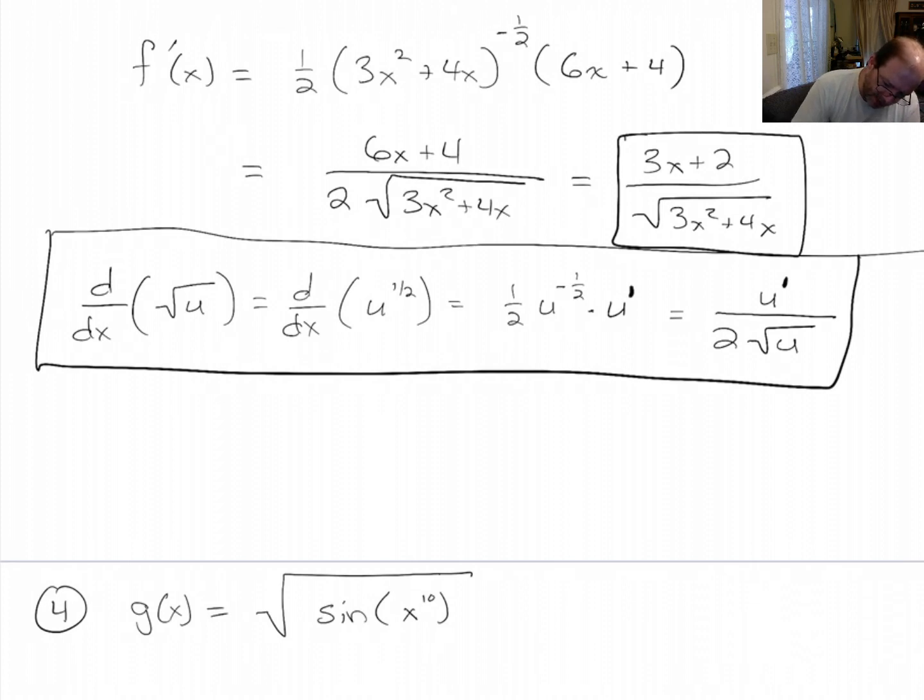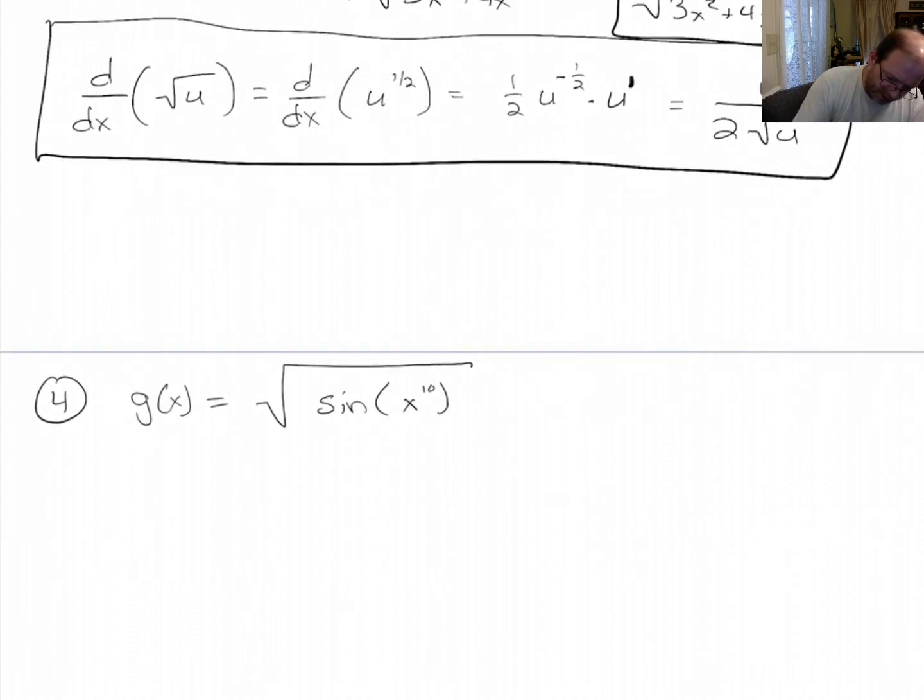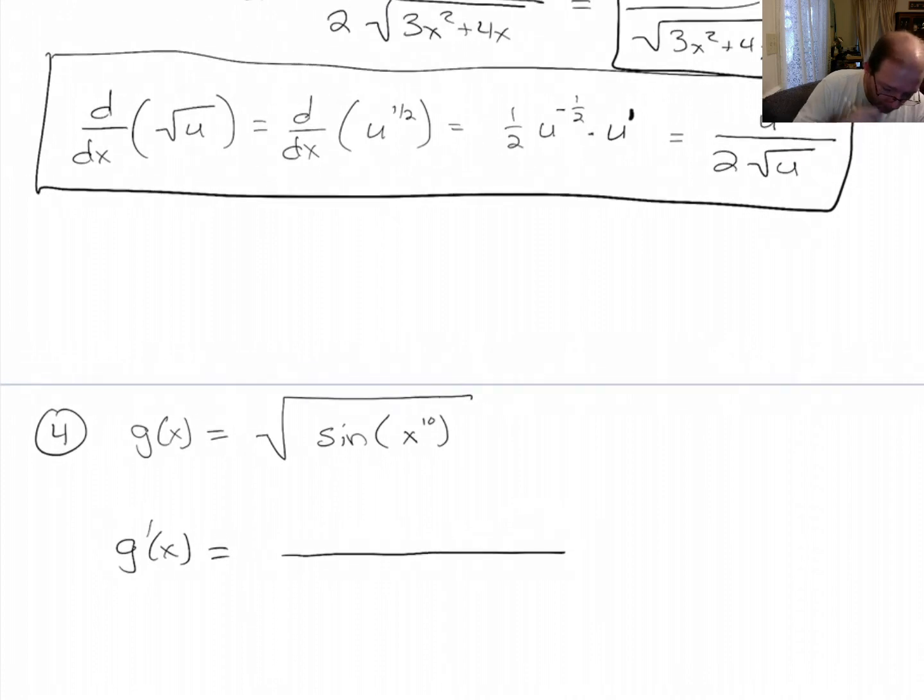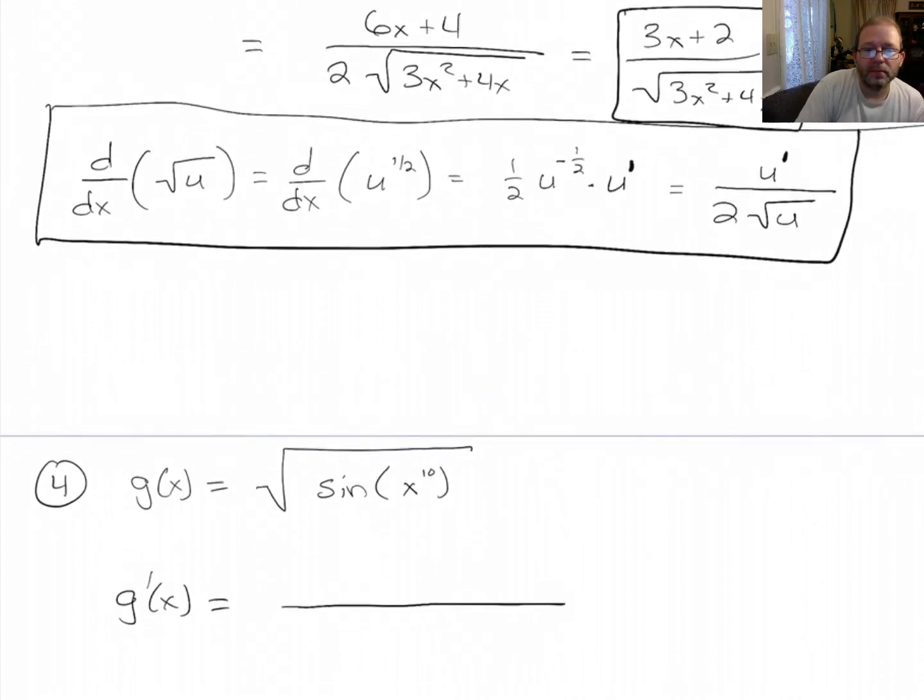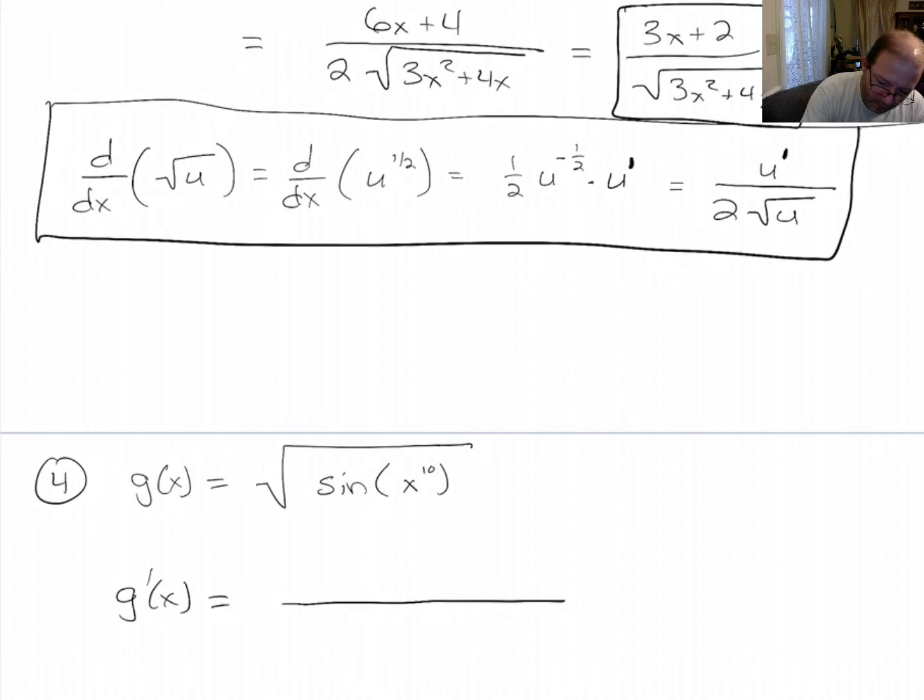Sine, square root of sine of x to the 10. What this rule says is g prime of x is going to be, let's see, this is my u.